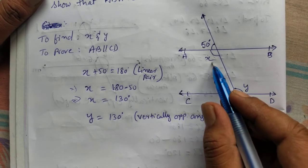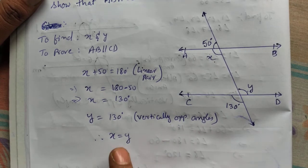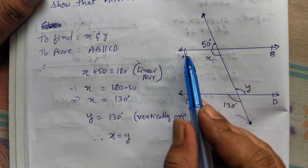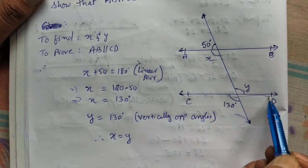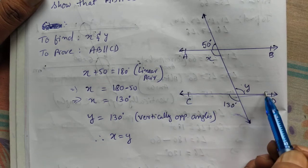We got x also 130, y also 130. That means, therefore, x equal to y. If x and y are same, that means we are showing that alternate angles are same. If alternate angles are same, this line have to be parallel.